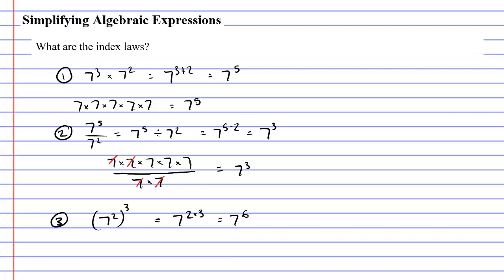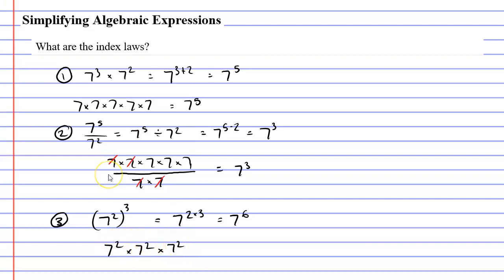Well, let's expand this once again. I know that inside the brackets I've got 7 to the power of 2. Now if I put this to the power of 3, it means I need to multiply it 3 times: 7 to the power of 2 times 7 to the power of 2 times 7 to the power of 2. You might remember back at rule 1 — when the bases are the same, you can simply add the powers. What's 2 plus 2 plus 2? Well, we get 7 to the power of 6.